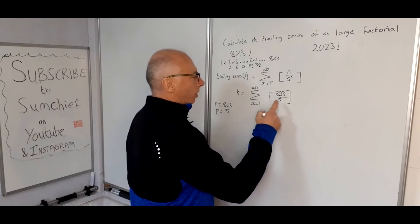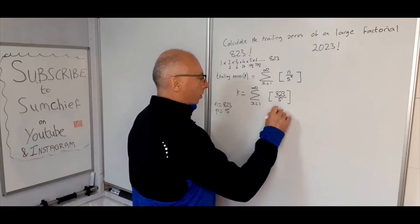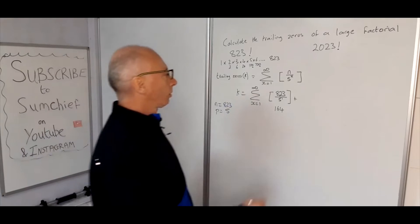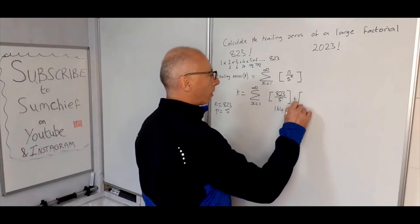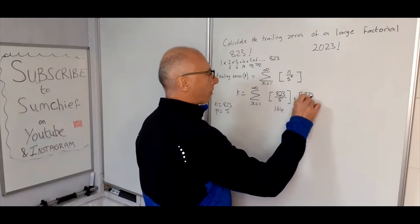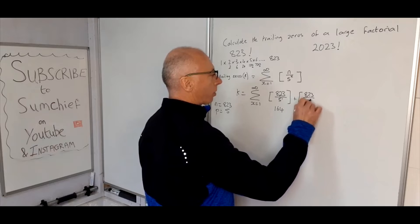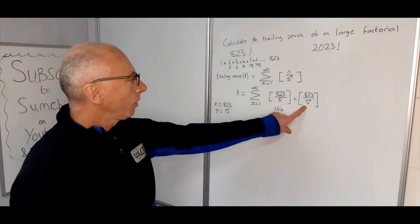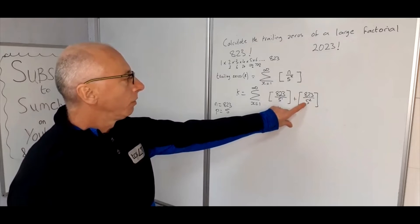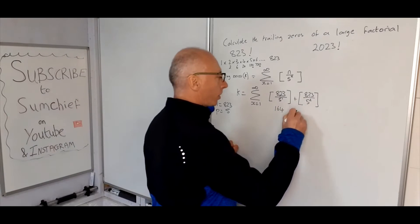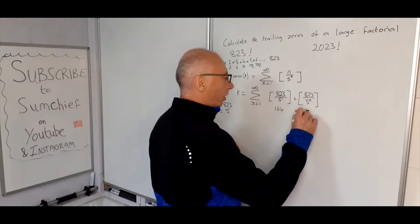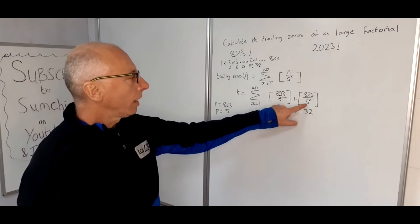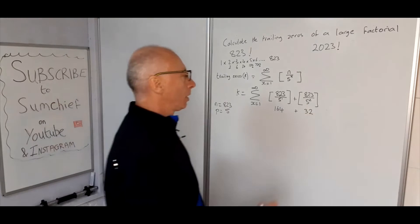So how many fives are there in 823? Well, 165 times 5 is 825, so that's going to give us 164. Okay, so now on to x equals 2. 823 divided by 5 squared. 5 squared we know is 25, so 25 into 823, 4 per 100, so that's going to give us 32. So that's 32, that's our greatest integer function. It's 32 and a bit, but we're really interested in the whole numbers.